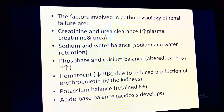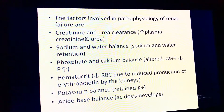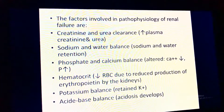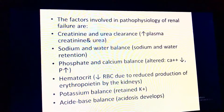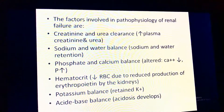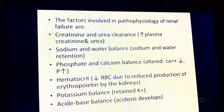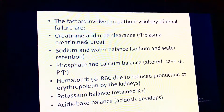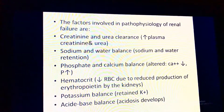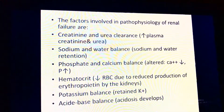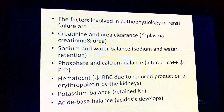The factors involved in the pathophysiology of chronic renal failure include: elevated plasma creatinine and urea; sodium and water retention; phosphate and calcium imbalance with decreased calcium and increased phosphate; decreased hematocrit due to reduced erythropoietin production by the kidneys; potassium retention; and development of metabolic acidosis.